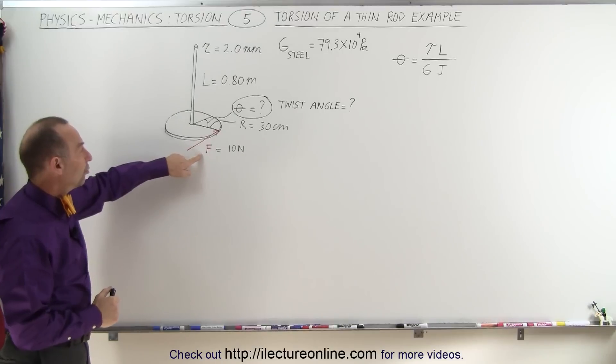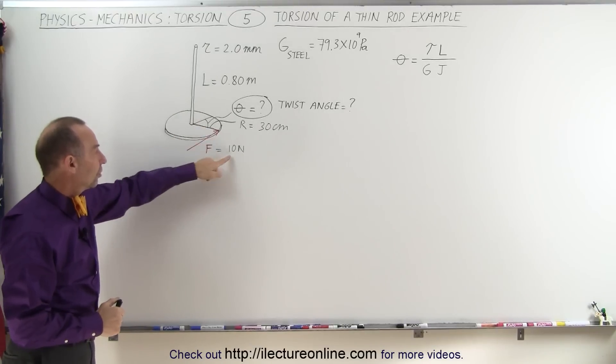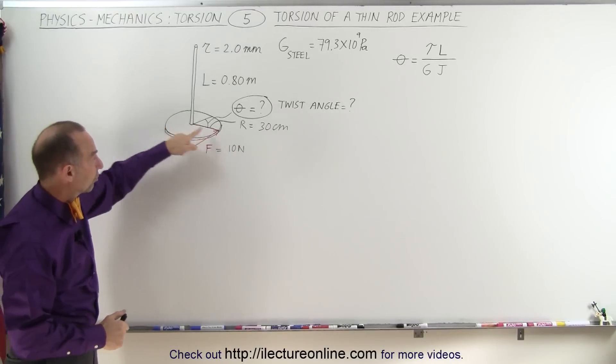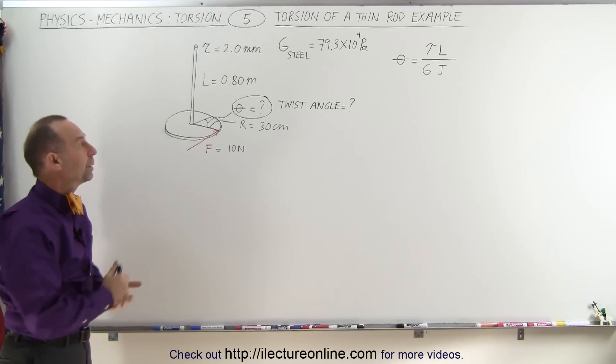If we apply a force parallel to the edge of the disc of 10 newtons, and knowing that the radius of the disc is 30 centimeters, what will be that twist angle?